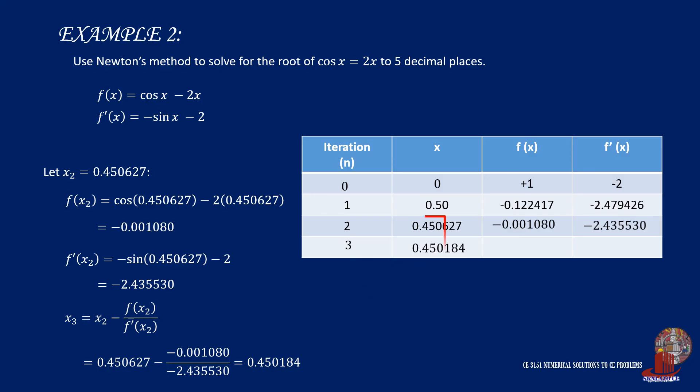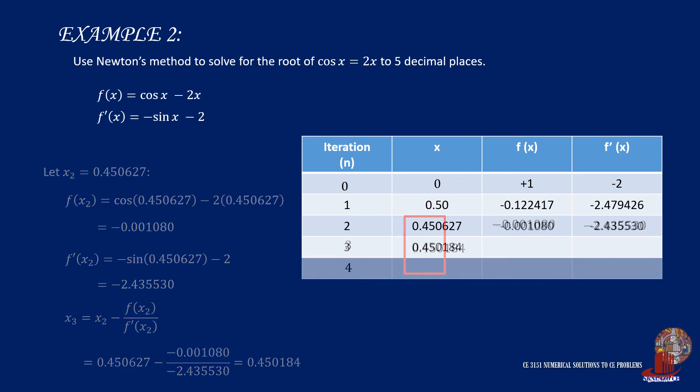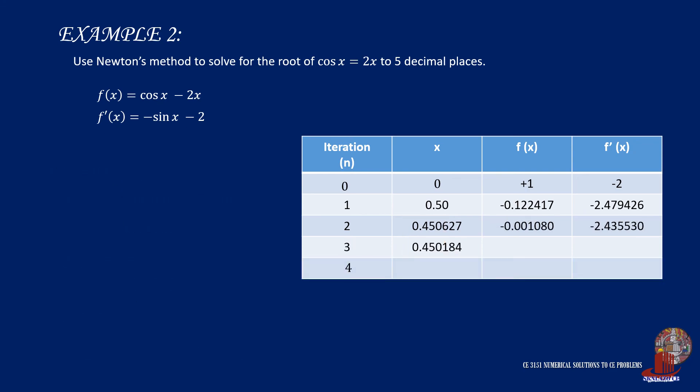Now, we can see that we have three decimal places in order. Then work on another iteration for the other decimal places. Using x sub 3 into the two functions, we get negative 9.47 times 10 raised to negative 7 for f of x. Negative 2.435131 for f' of x sub 3.